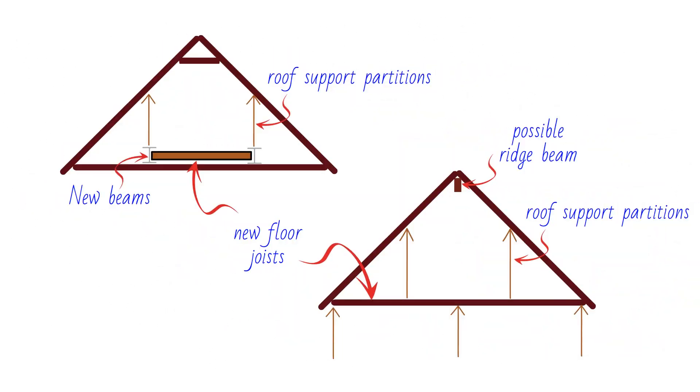The new floor joist should also be capable of supporting the existing ceiling, particularly where binders are to be removed. Binders are horizontal members that connect the rafters and provide stability to the roof structure. Where the new floor joists are to carry roof load, they need to be suitably designed.